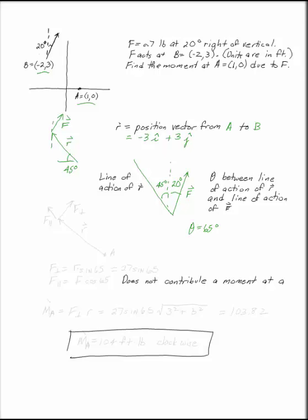Now remember, one of the ways we can find a moment is if you take the vector R, which goes from A to B, and break F into components so that you have some perpendicular component and some parallel component. We know that the parallel component, which in this case would be F cosine 65, is not going to create a moment at A.